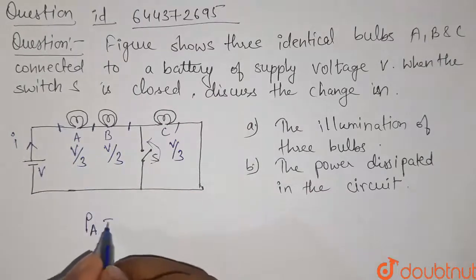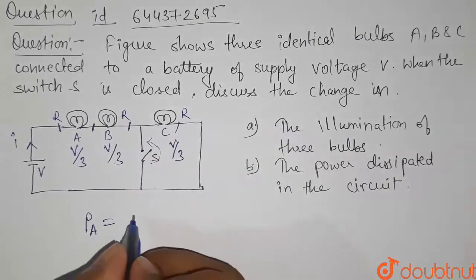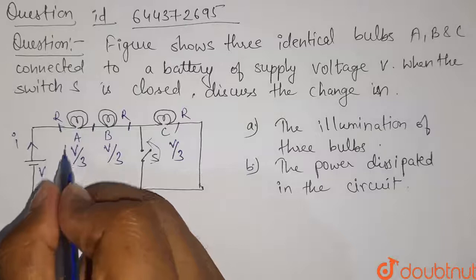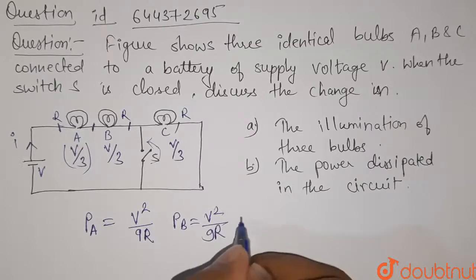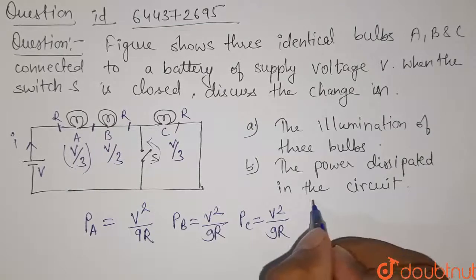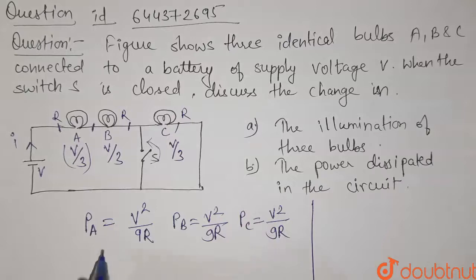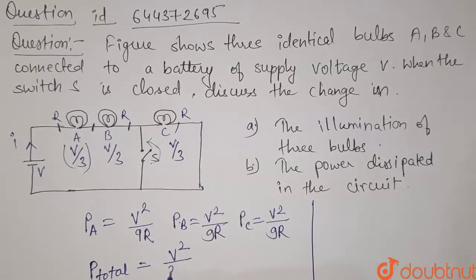If the resistance of each bulb is R, the power consumed by bulb A is V²/9R — that is, the square of the potential difference divided by resistance. Similarly, the power consumed by bulb B is V²/9R, and the same for bulb C. The total power in the first case is PA + PB + PC, which equals V²/3R.